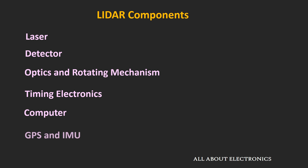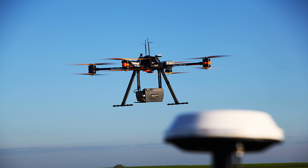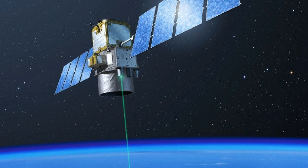Apart from these components, GPS and IMU — which stands for Inertial Measurement Unit — are also part of the LIDAR system. GPS and IMU are particularly useful when we have airborne LIDARs, meaning the LIDAR system is fitted in a helicopter, aeroplane, drone, or even in satellites. These airborne LIDARs are particularly useful to scan a particular terrain.